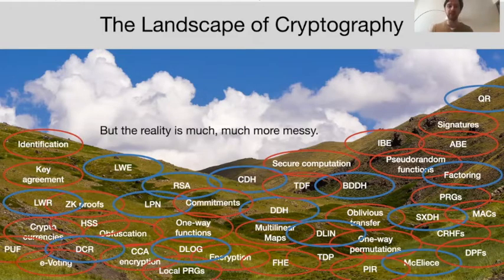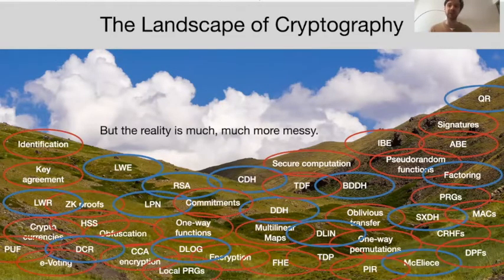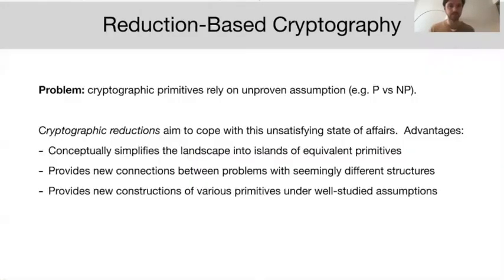This state of affairs is quite unfortunate because it's extremely hard to analyze in isolation each of these primitives and assumptions one by one. And the problem is we cannot hope to prove them secure all at once because they currently all rely on unproven assumptions such as the P versus NP problem.